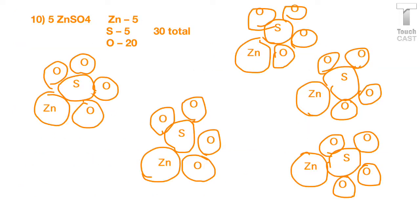So here's your example. Five zinc sulfates. And you'll notice I've drawn each individual molecule, so you get a chance to see how many zincs, how many sulfurs, and how many oxygens. And that's a wrap.